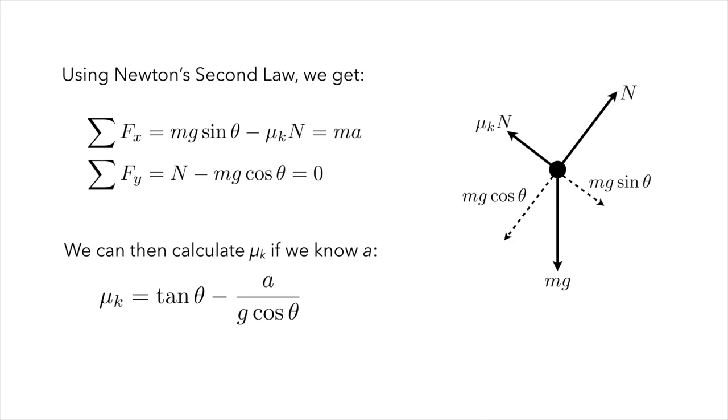So we have along the x coordinate: mg sine theta minus mu k N is equal to m times a, where a is the acceleration down the ramp. The block isn't moving up or down with respect to the ramp, so the acceleration for the block is going to be zero, and so that's going to give us a variable that allows us to eliminate the normal force, and with that we can calculate the coefficient of kinetic friction if we know how the block is accelerating.